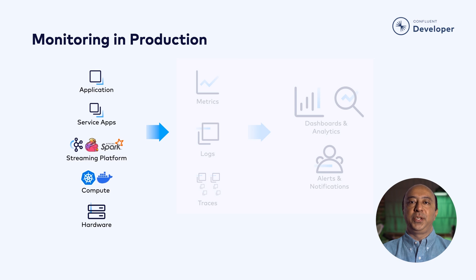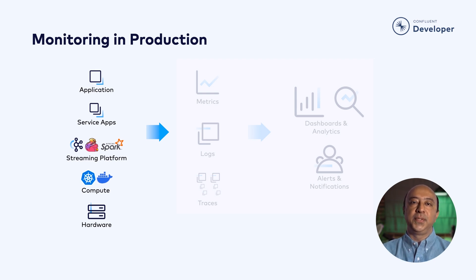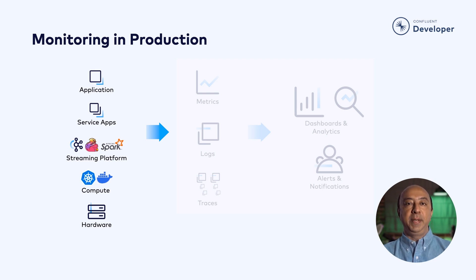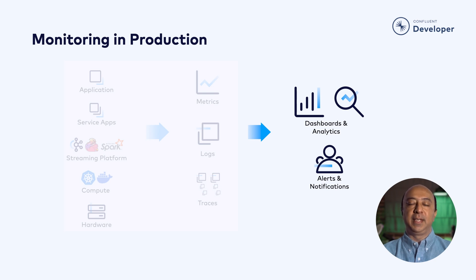In our data streaming application, telemetry is emitted not just by our client applications, but across the entire technology stack. It is emitted by our code, the client library, other services that our client uses, our streaming platform, the container or virtualization framework it is hosted on, and finally, the bare metal hardware that everything runs on. All of this telemetry is pushed into your monitoring infrastructure where it can be analyzed, visualized, and alerted on.